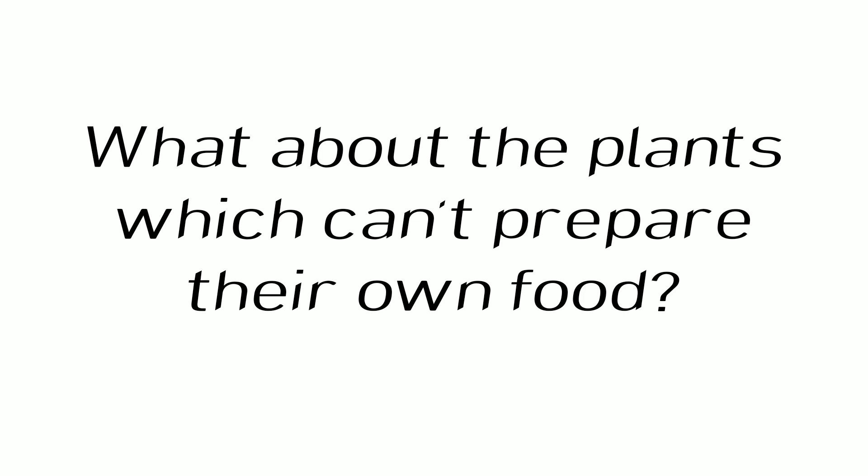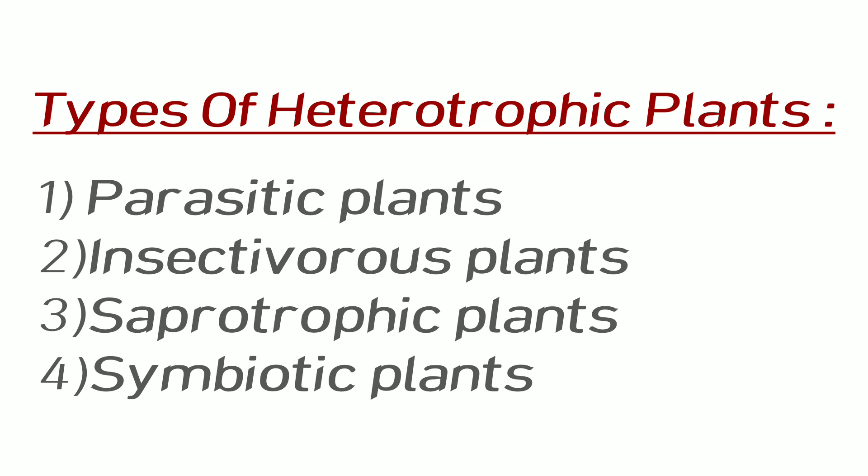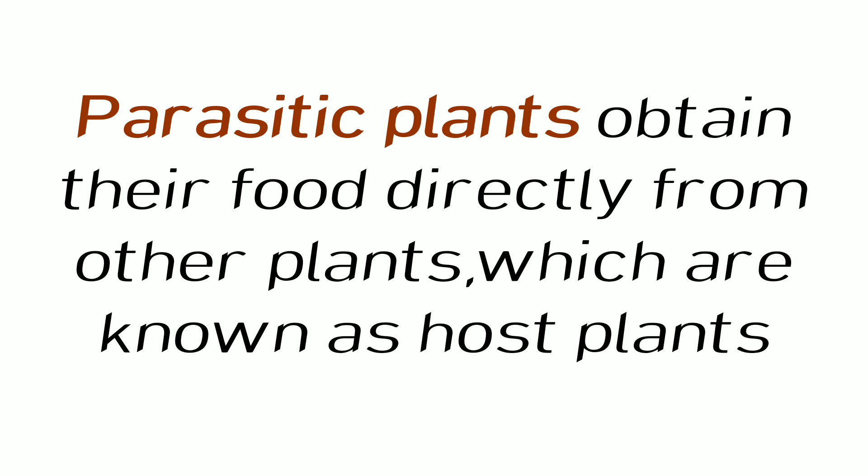What about plants that cannot prepare their own food? To study this, let us look at the heterotrophic mode of nutrition. In this mode of nutrition, organisms obtain their food from other plants and animals. Heterotrophic plants are of four types: parasitic plants, insectivorous plants, saprophytic plants, and symbiotic plants.